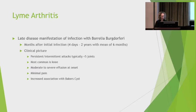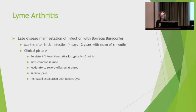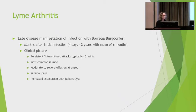This is Lyme arthritis — a late disease manifestation of infection with Borrelia burgdorferi. It can present months after the initial infection; the mean is around six months, but documented cases range from four days to two years. Clinically you'll see persistent or intermittent attacks, typically in fewer than five joints, most commonly the knee, but also ankles, shoulders, elbows, wrists, and even the TMJ. Periarticular sites such as bursae and tendons can also be affected. You typically see a moderate to severe effusion with minimal pain, and there's an increased association with Baker cysts.